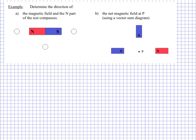Here's a couple of example questions just to kick things off. Here's A - we have a bar magnet, and we're asked to find the magnetic field and the north part of the test compass. Typically when we draw a compass, we represent it with an arrow, and the arrowhead is going to be the north. We hopefully can recall that the north pole of our Earth is actually a south magnetic pole. So this would be the north end of a bar magnet on the compass, and that would be the south, pointing towards the south magnetic pole, which is the north pole we typically refer to.